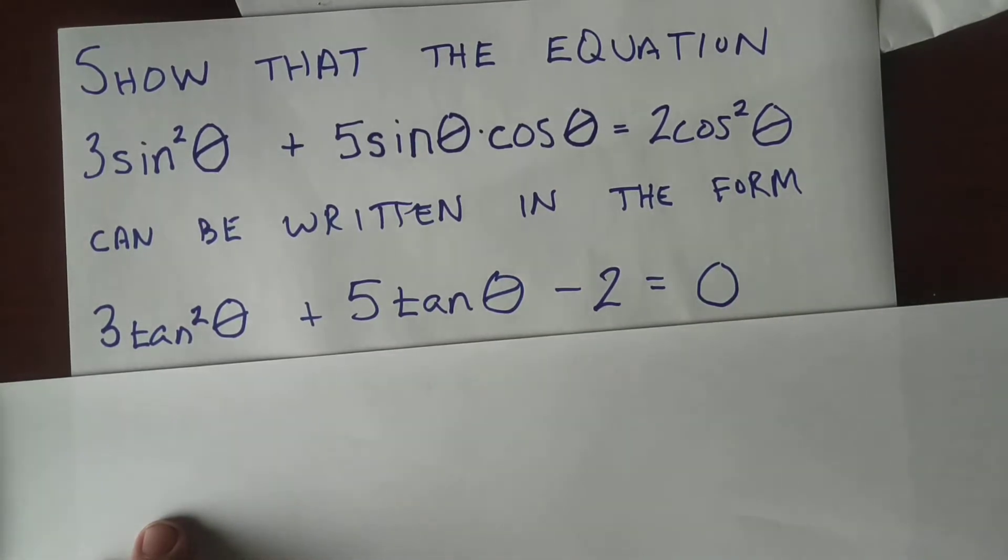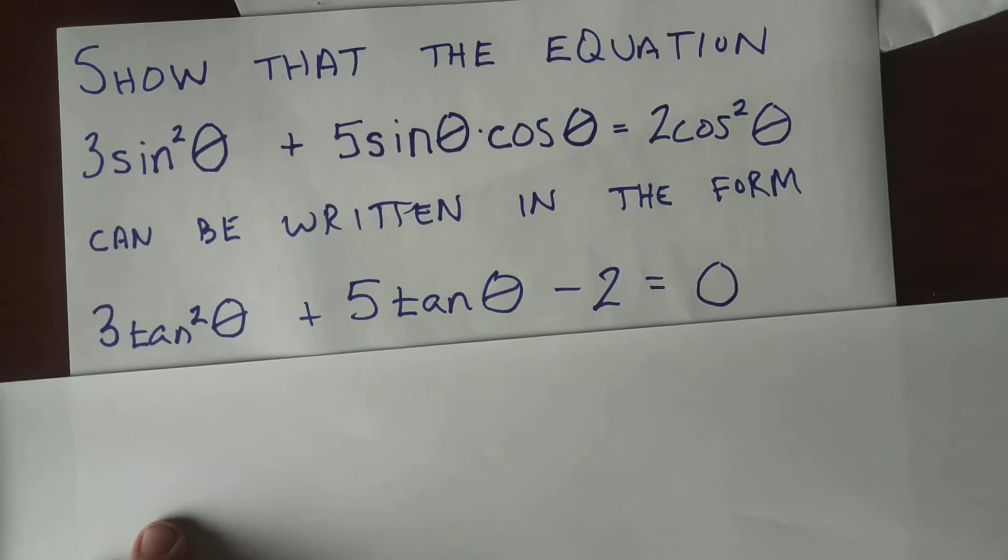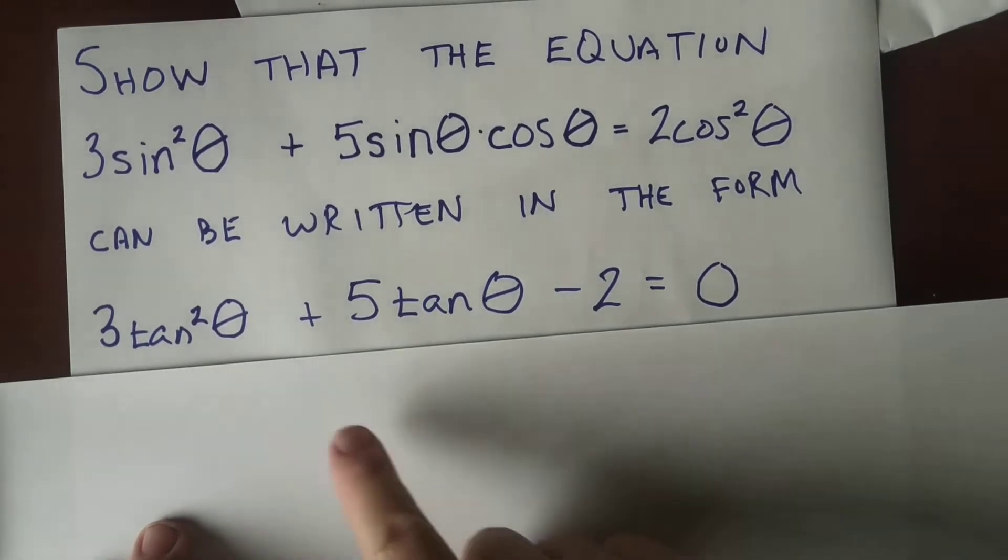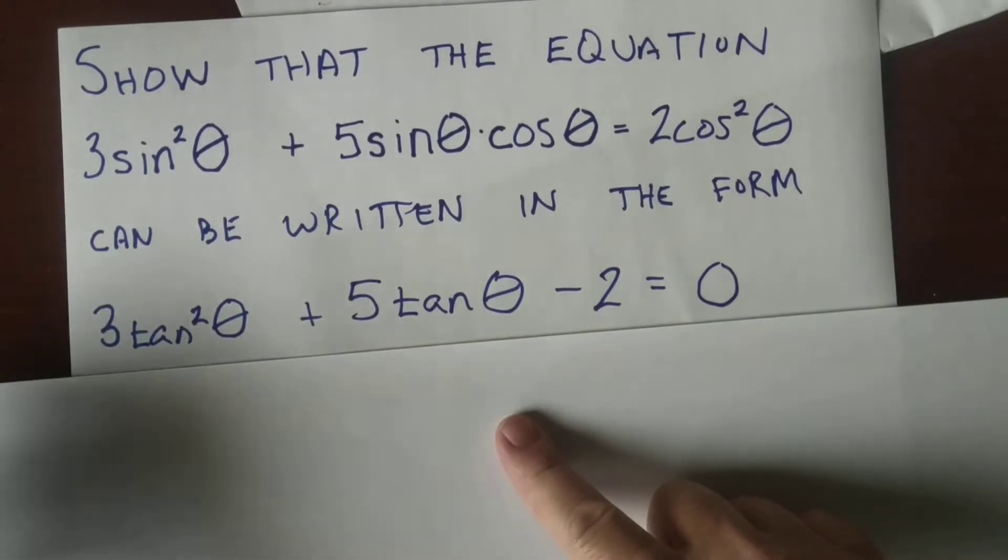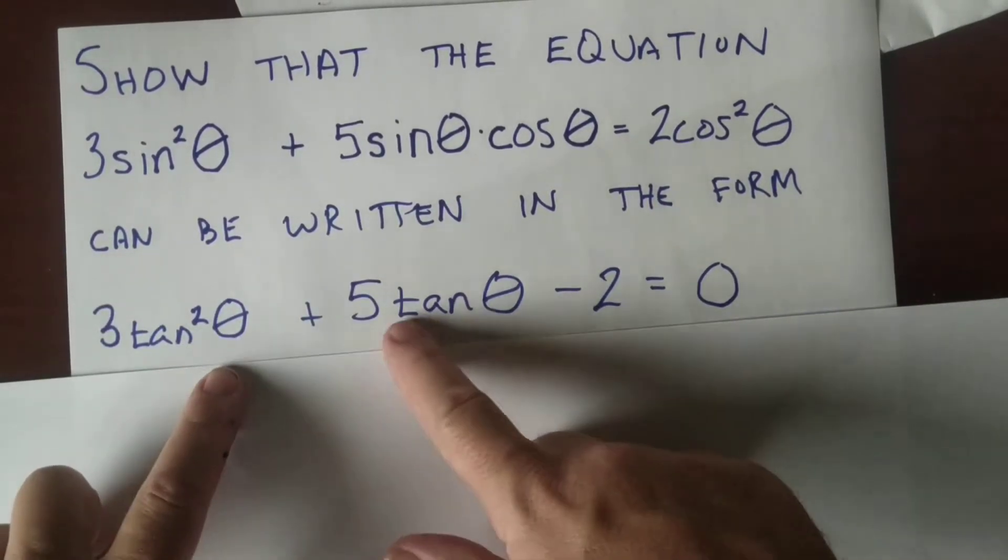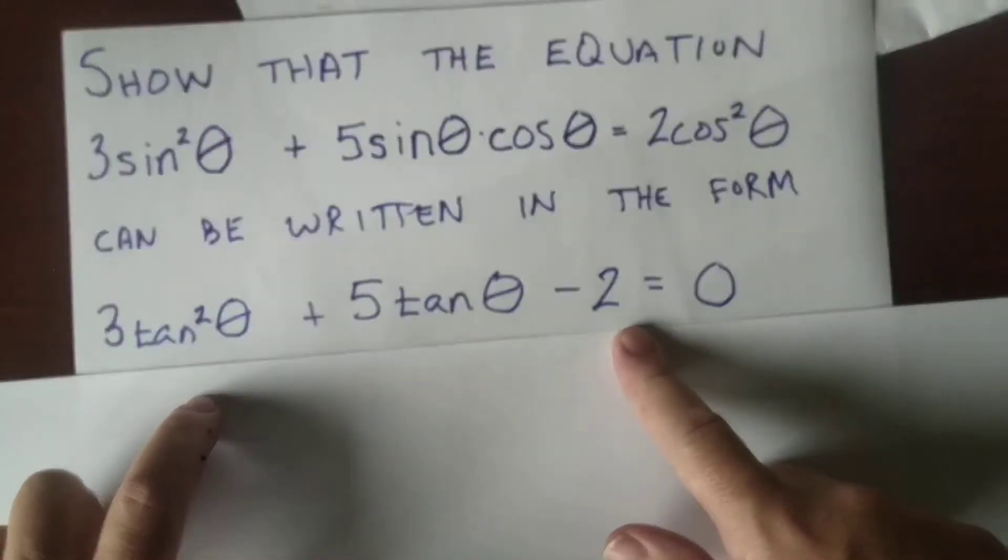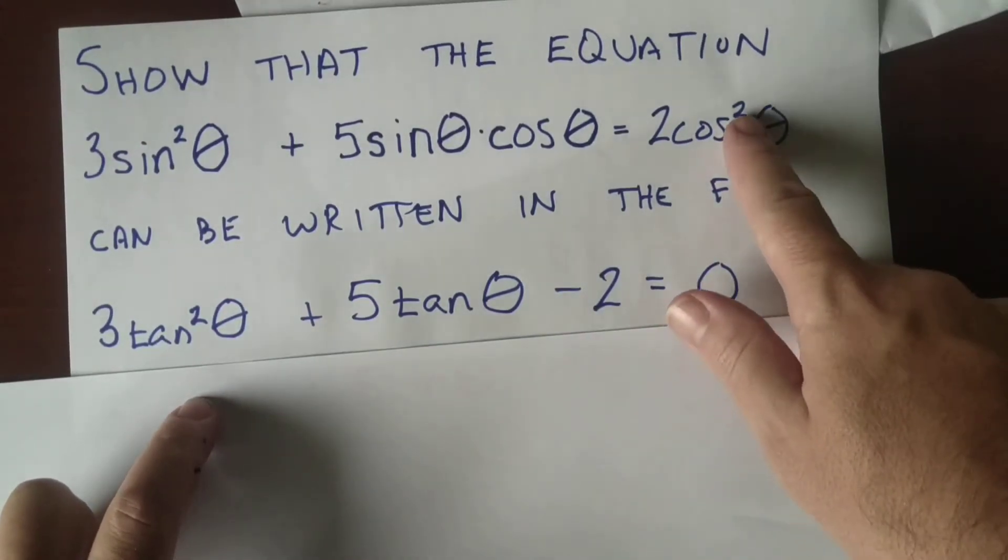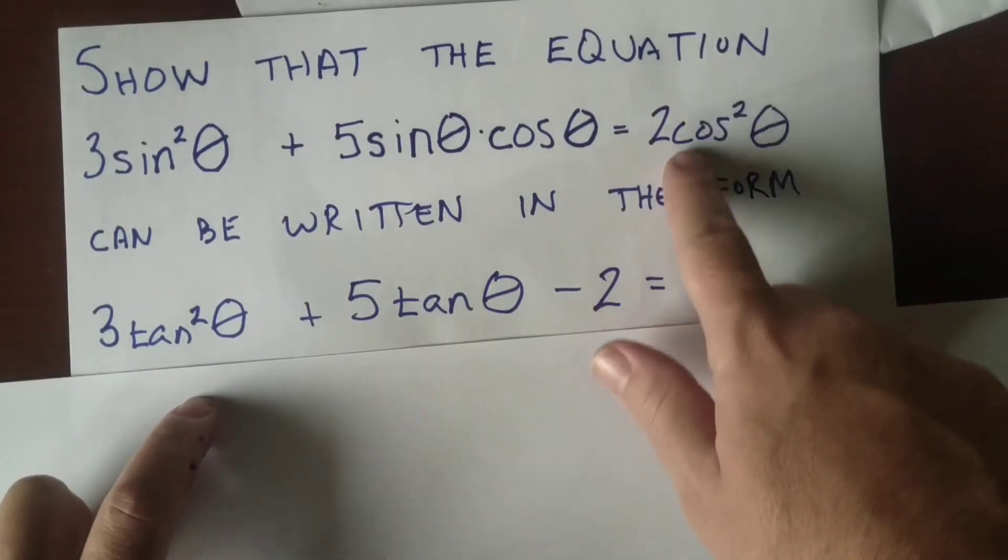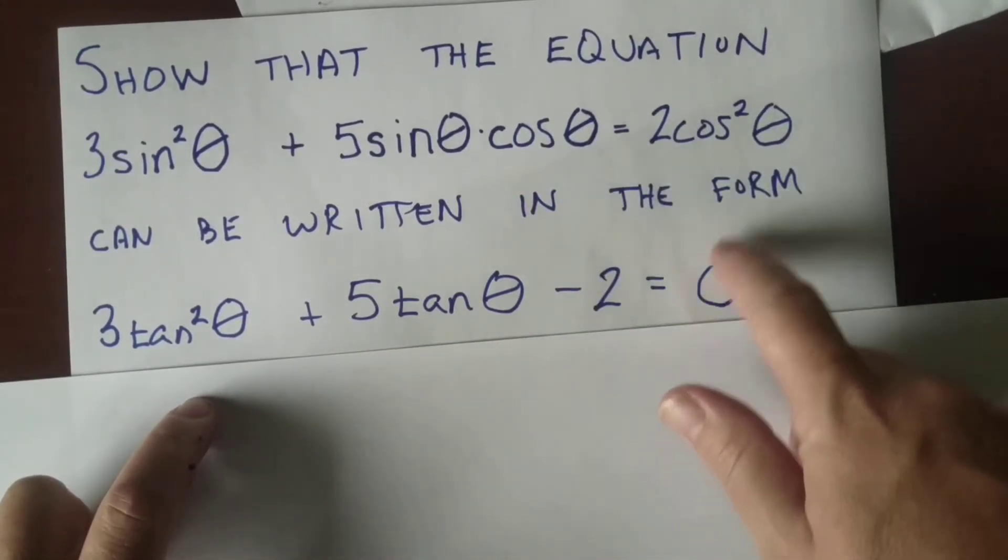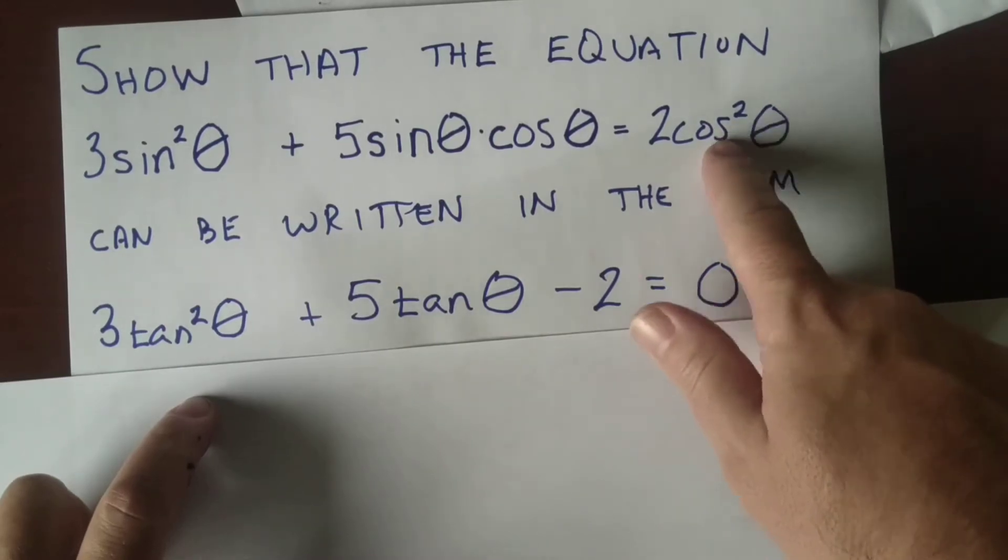So please pause the video and try it. Don't forget we're going to be using the two identities that we went over, actually just one of the identities. We want to get to tangents, we want to make this look like this. So we're going to have to rearrange this 2 cosine squared. We're going to have to move it over and our first objective is to make this zero here.